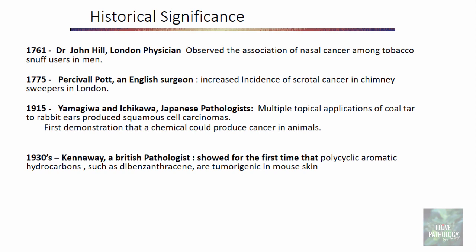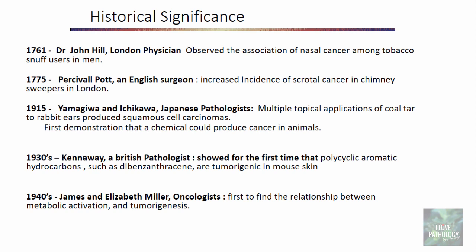In the 1940s, James and Elizabeth Miller, oncologists, were the first to find out the relationship between metabolic activation and tumorigenesis, which we will be studying in detail in the subsequent slides.